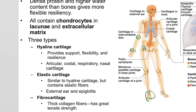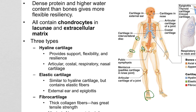Articular cartilage covers the surface of both bones in a synovial joint. Its purpose is mainly to reduce friction — you don't want bone tissue actually contacting other bone tissue, as it would rub raw pretty quickly. It also acts partly as a cushion; hyaline cartilage has more water and protein content than bone, giving some impact support.